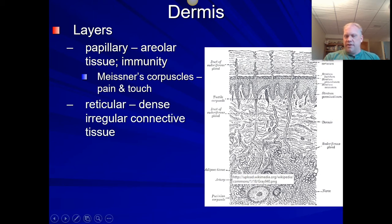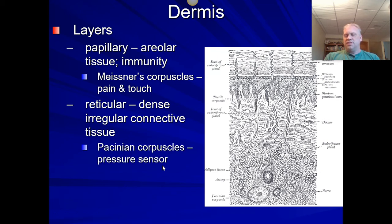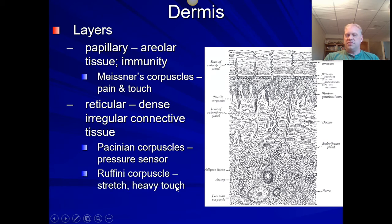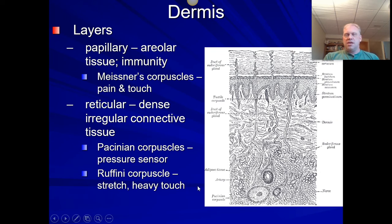The lower layer of the dermis is the reticular layer — dense, irregular connective tissue. This layer contains deep pressure sensors called Pacinian corpuscles, as well as Ruffini corpuscles, which respond to heavy touch and stretch receptors. Think of it in terms of skin getting caught and twisted, causing discomfort — these sensors are there to make sure we're not damaging tissues any further.